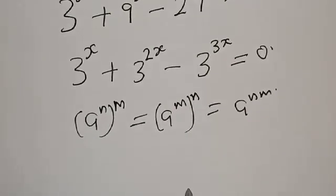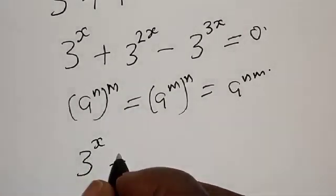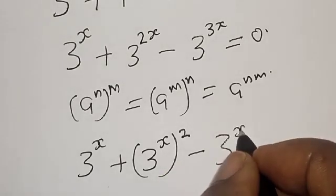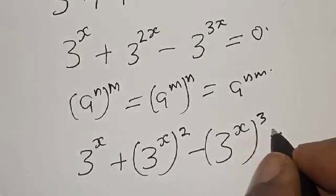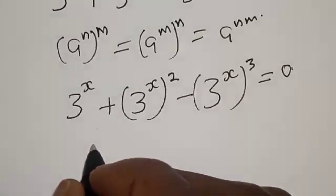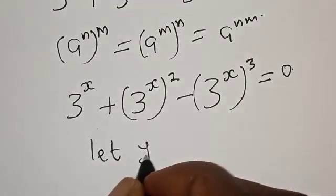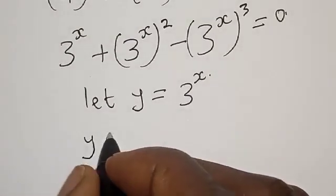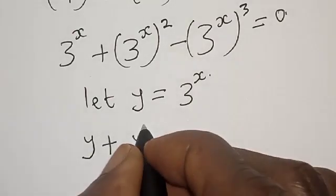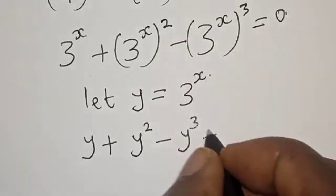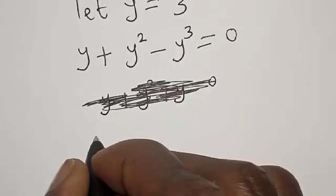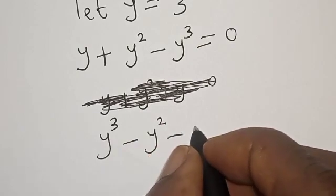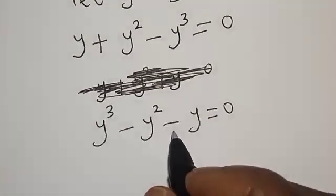We rewrite the terms using base 3: 3 raised to power s, plus 3 raised to power 2s, minus 3 raised to power 3s is equal to 0. Let y equal 3 raised to power s. Then we have y plus y squared minus y cubed is equal to 0. Since y is common, let's factor y out.